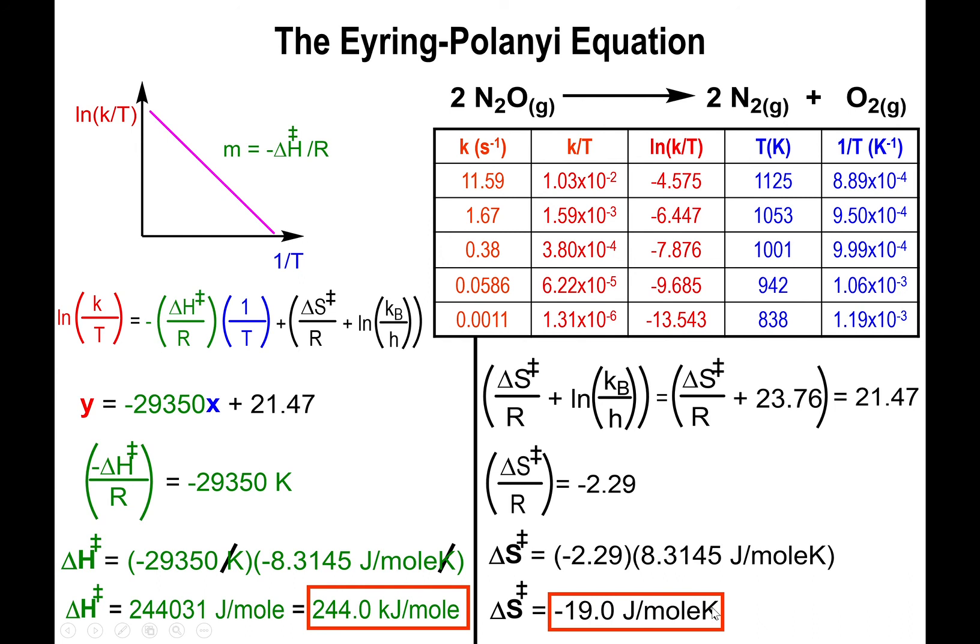It's not very huge but it is negative, meaning that you are forming a slightly more orderly complex than the reactants used to be. This could mean that there is a rearrangement in the molecular shape giving you something a little more ordered.